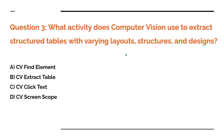Question number three: what activity does computer vision use to extract structured tables with varying layouts, structures, and designs? The options are: A — CV Find Element, B — CV Extract Table, C — CV Click Text, D — CV Screenshot. Comment your answer. Pause the video while you are reading the question.